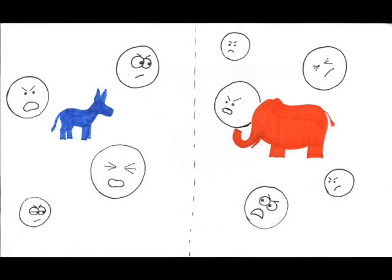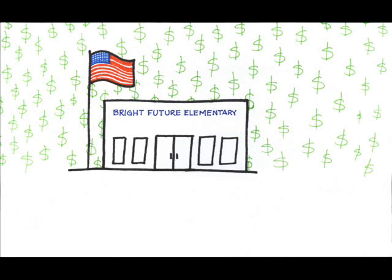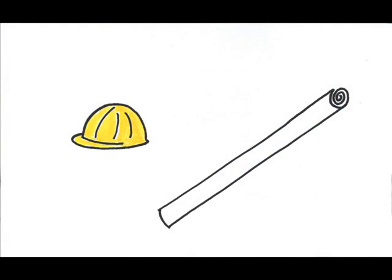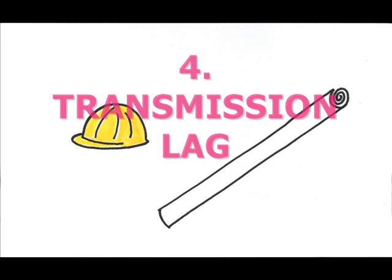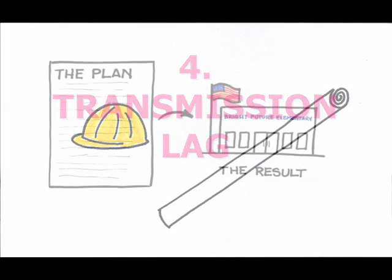Fourth, after months of wrangling, the Congress agrees on a plan of action, expansionary fiscal policy, perhaps in the form of increased government spending on new schools. Of course, this requires getting bids for designs and construction, among other things. The transmission lag is the time it takes to actually put the plan into action.